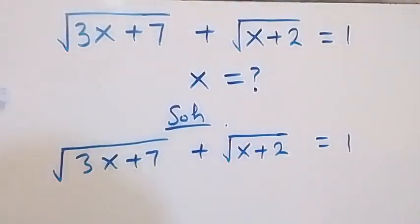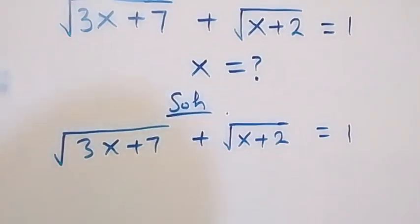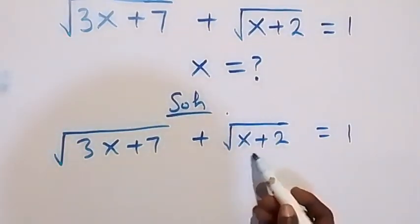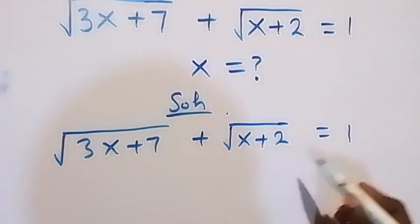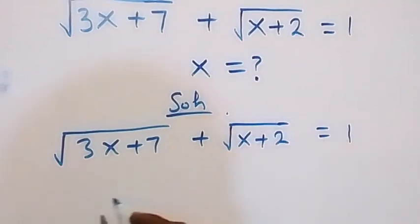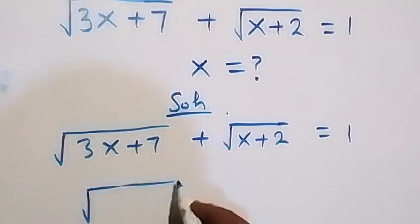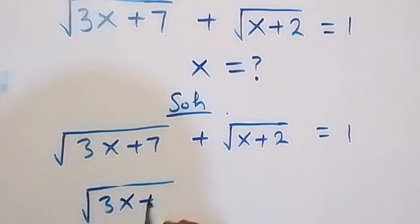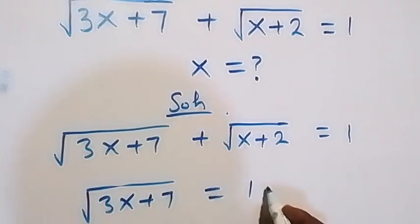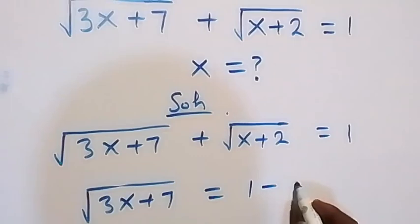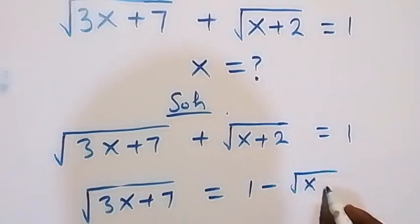Here, let's take the square root of x plus 2 to the other side, and this becomes: square root of 3x plus 7 now equals 1 minus square root of x plus 2.